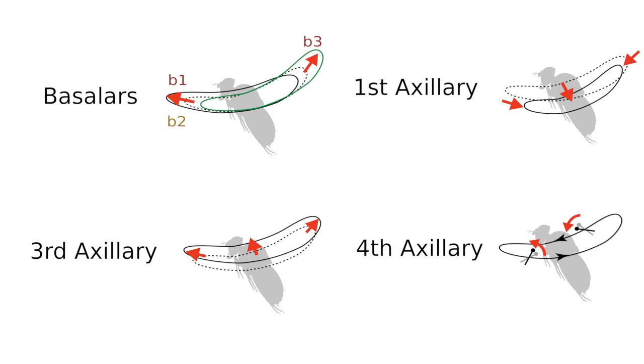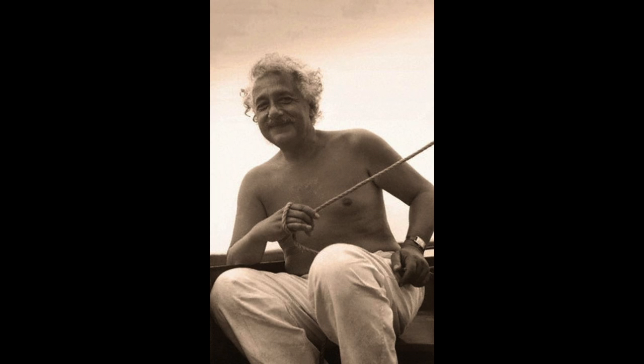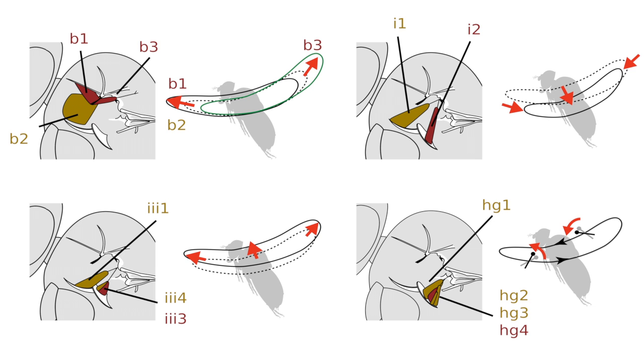As an analogy, a sailor might make small adjustments to the rigging on a sailboat to accommodate changing wind conditions, but then use the tiller to come about quickly or avoid hitting an obstacle. Likewise, the fly might use its tonic muscles to make subtle adjustments in wing motion so that it flies straight, but then briefly recruit the phasic muscles to execute rapid turns.